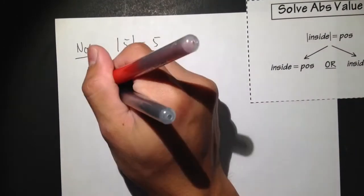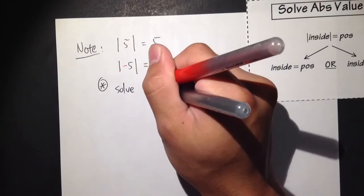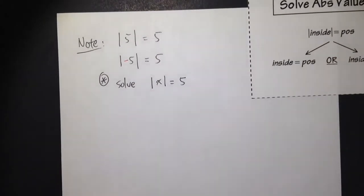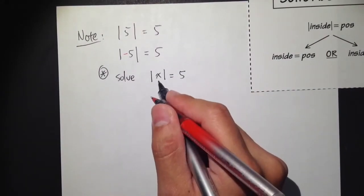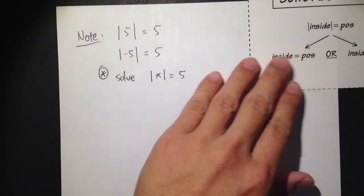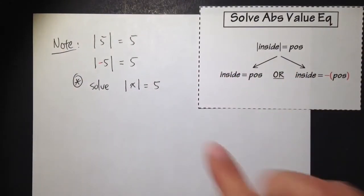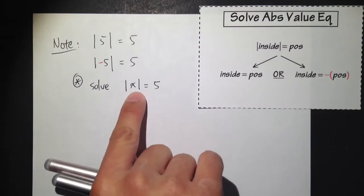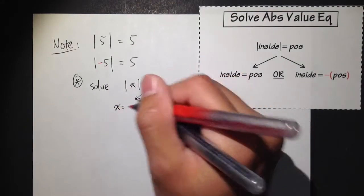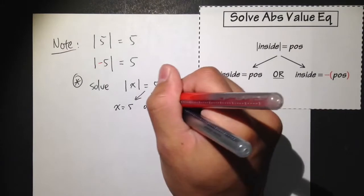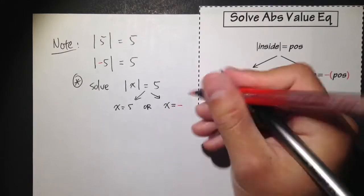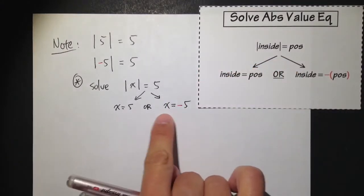So in other words, whenever we are trying to solve, say, absolute value of x equals the positive number 5, we actually have two choices for x. The first choice is positive 5, or the second choice is negative 5. So whenever you have an absolute value of something inside, we say the inside can equal positive 5, or the inside x could also be the negative of that number — so x can be 5 or x can be negative 5.